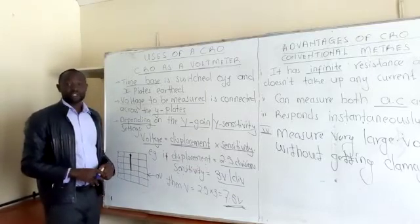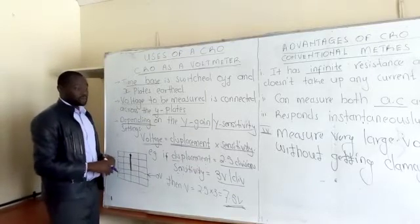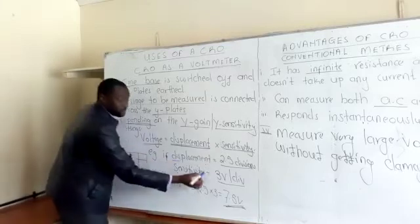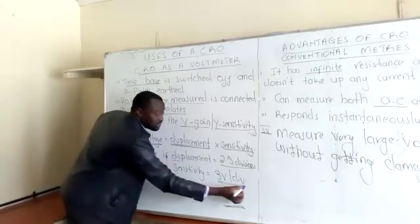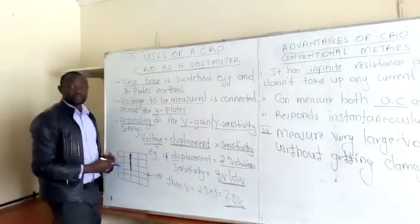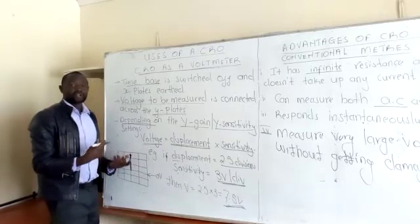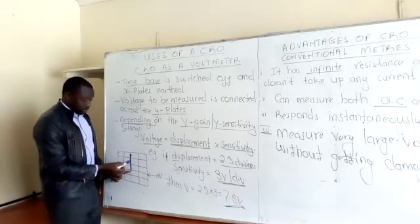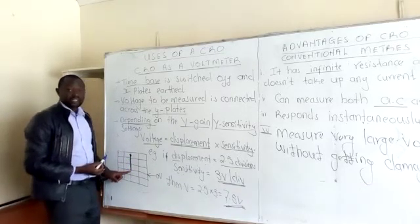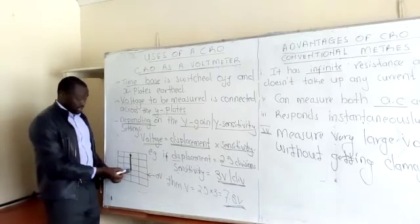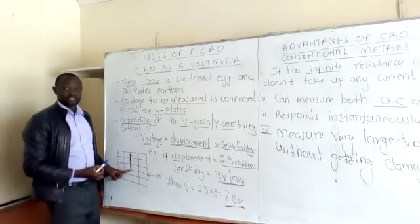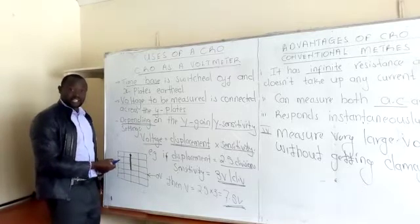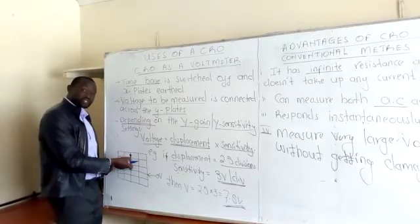For example, if the sensitivity is 3 volts per division and we connect our voltage and it moves vertically on the screen through 2.5 divisions — for every division 3 volts, for the second division that will be 3 times 2.